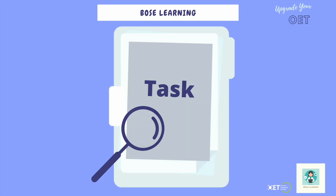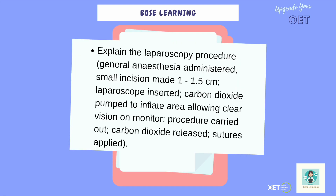So let's start by taking a look at just one part of the speaking task. In the speaking task you have the setting, you have the background, and you have a series of tasks. We're just going to be looking at one of the tasks: explain the procedure. In brackets they give you an idea of the kinds of things you should say — general anaesthetic administered, the small incision made, the laparoscope inserted, carbon dioxide pumped in to inflate the area, the procedure carried out, carbon dioxide released, and sutures applied.